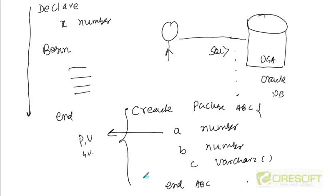As discussed previously, the package specification is mandatory but the package body is not mandatory. This is a case where we have no package body — only a package specification. This is all about the visibility rules that you need to understand.